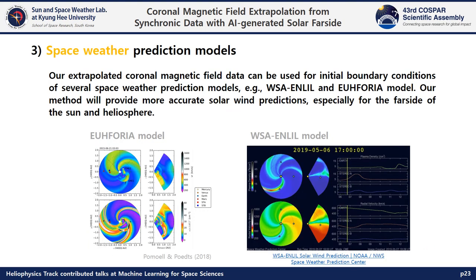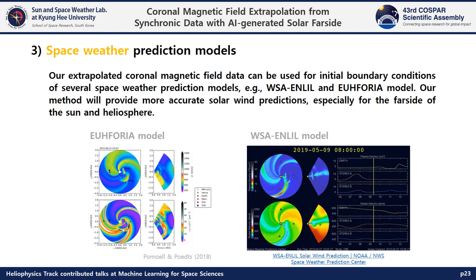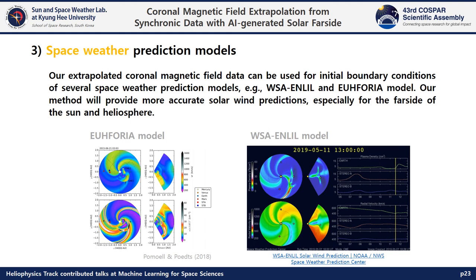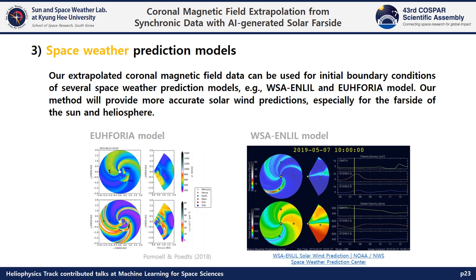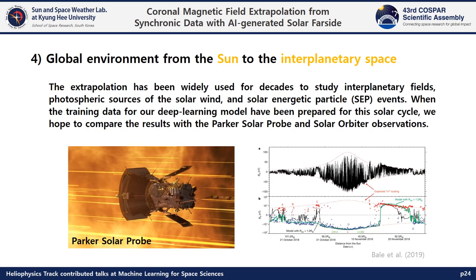Third, our improved coronal magnetic field data can be used for initial boundary conditions of several space weather prediction models, and our model will provide more accurate solar wind predictions, especially for the far side of the sun and heliosphere. Fourth, our PFSS extrapolation can help us study the global environment from the sun to the interplanetary space. When training data for our deep learning model have been prepared for this solar cycle, we hope to compare the results with Parker Solar Probe and Solar Orbiter observations.